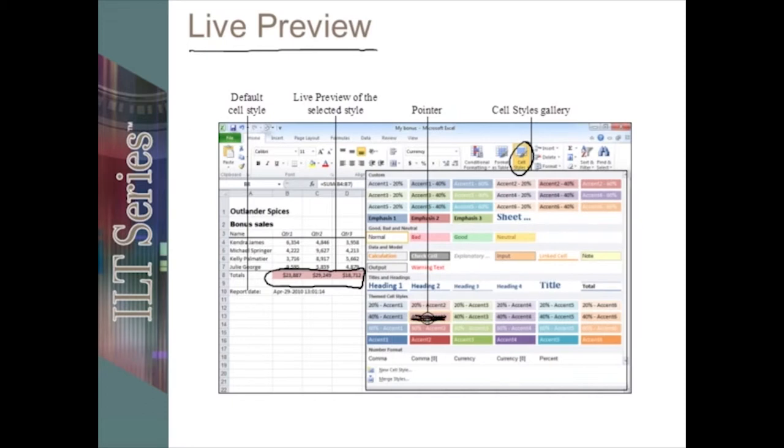And so if you point and hover over a style it will change and show us the live preview. Once we commit to a style and decide to work with it simply left mouse click and then it permanently applies that particular style to the cell area in this case that happened to have been selected.